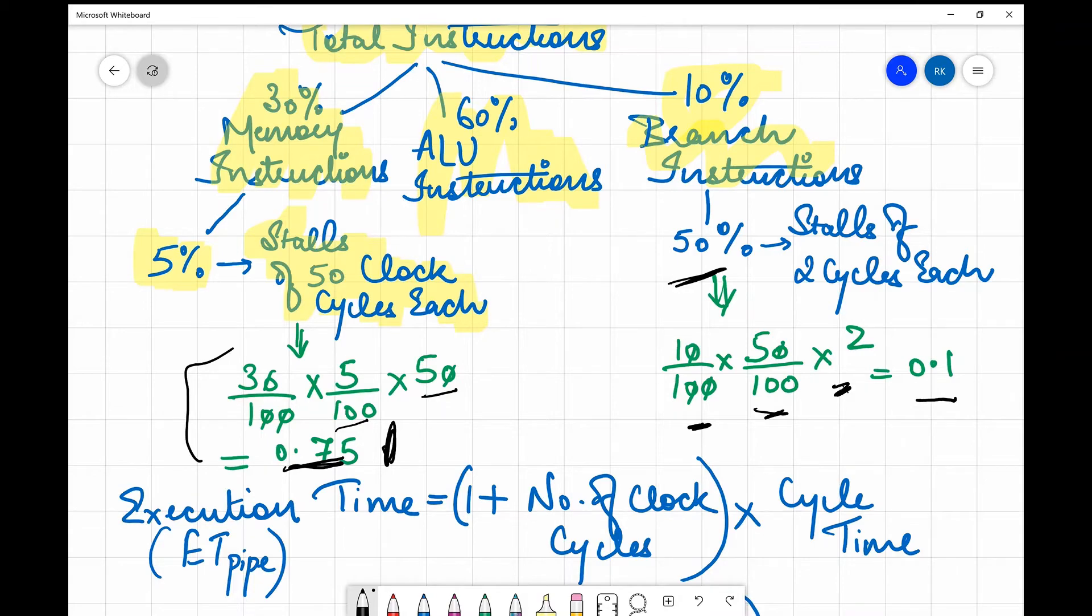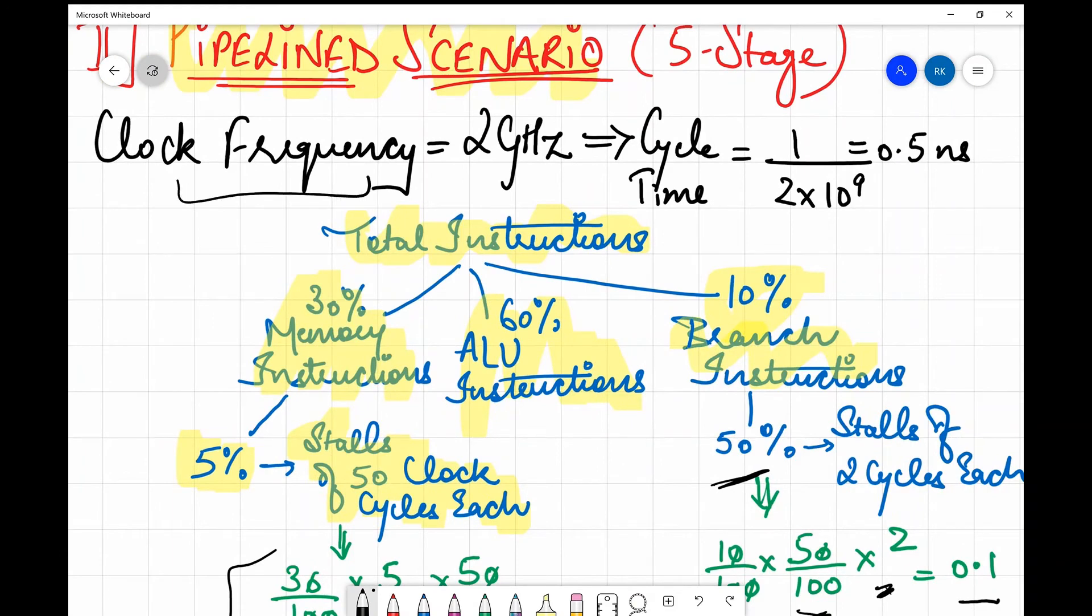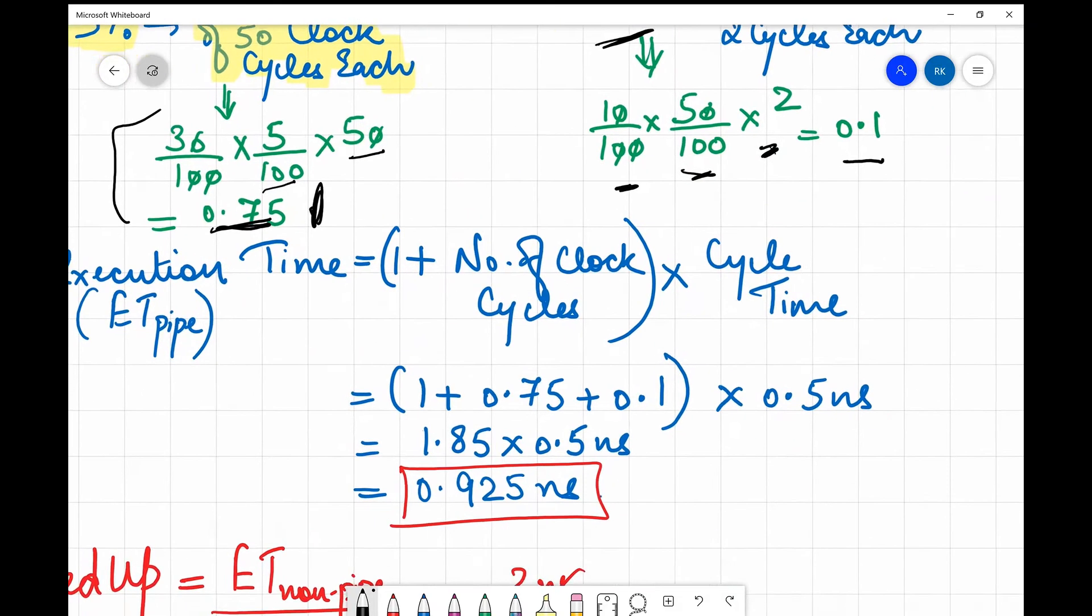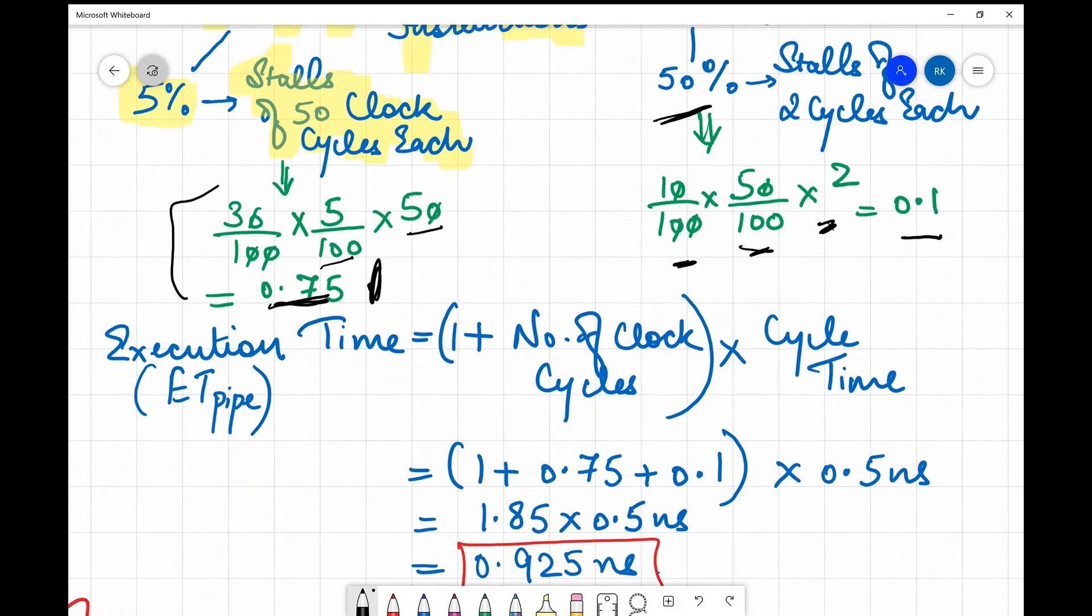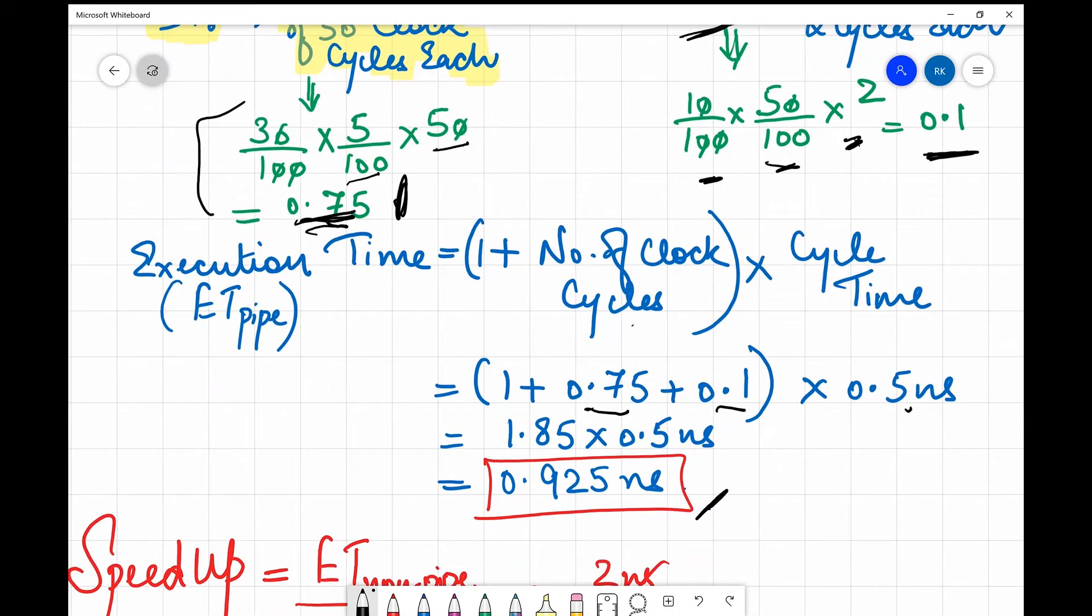Then finally we compute the execution time. Using this clock frequency we compute the cycle time in the same manner: cycle time is 1 by clock frequency which was 1 by 2 × 10^9 which is 0.5 nanoseconds. Now we use this entire thing in the formula which says execution time is (1 + number of clock cycles) × cycle time, which is (1 + 0.75 + 0.1) × 0.5. When you solve this entire thing that comes out to be 0.925 nanoseconds.